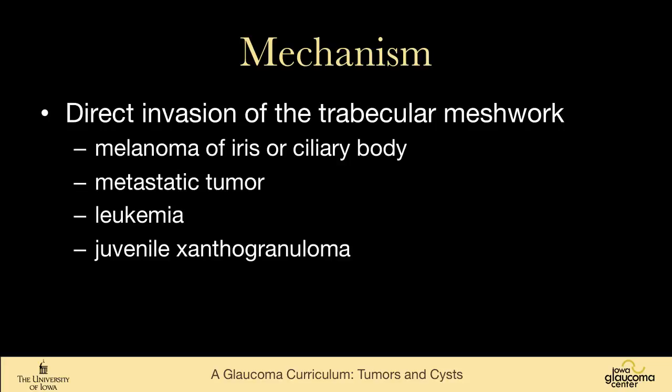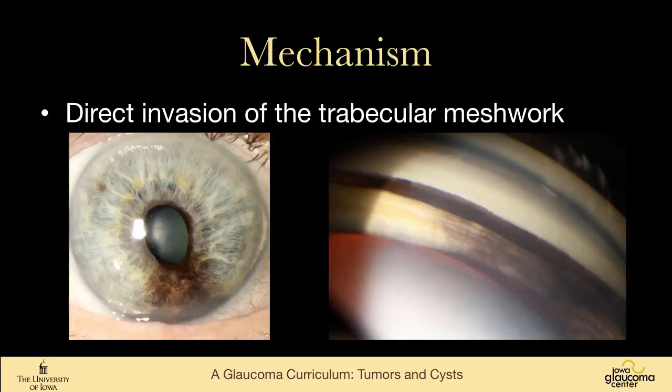We can also see trabecular meshwork invasion in metastatic tumors, leukemia, or juvenile xanthogranuloma. This patient has an iris melanoma that you can see on the left part of this image, and on gonioscopy it has invaded the trabecular meshwork so that the meshwork is completely packed with melanoma cells.